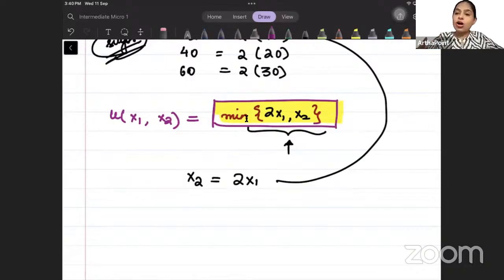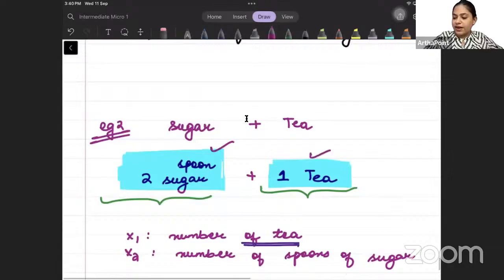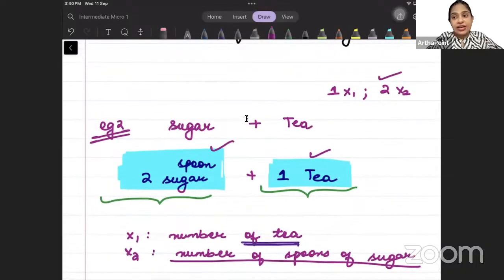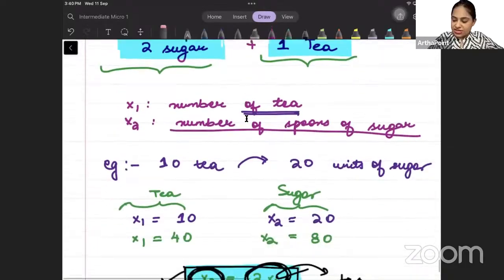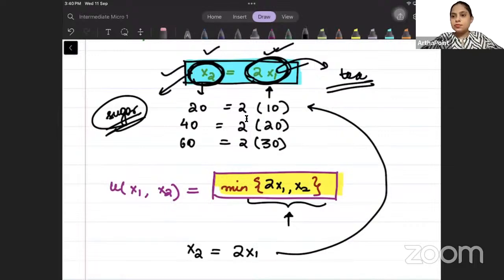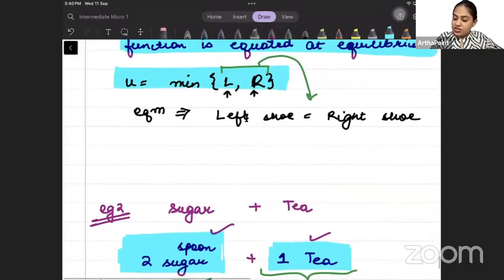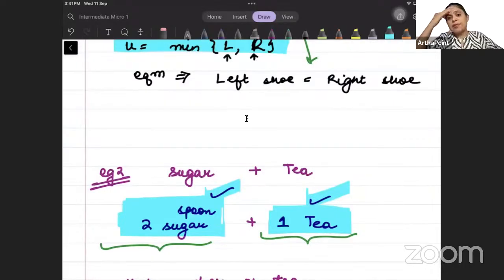So my utility function will become min of 2x1 comma x2. Many of the students will do this wrong. They get confused. They say ma'am 2 sugar 1 tea hai na, so they will put coefficient 1 with tea and coefficient 2 with sugar. Since sugar is represented by x2, they put 2 in front of x2. That is incorrect. Try to understand. What we are saying is x2 is 2 times x1. x2 is twice x1. x1 is tea and sugar is double. So therefore sugar will be x2 and here we will put 2x1. So that when we solve this, we will equate whatever comes inside the min. So we will get x2 is equal to 2x1. And this is the statement that sugar is twice the amount of tea.